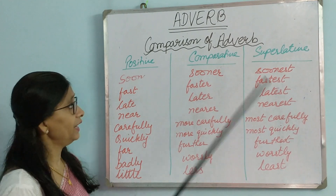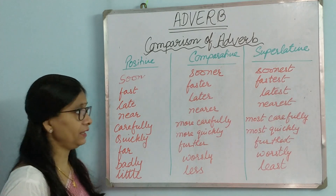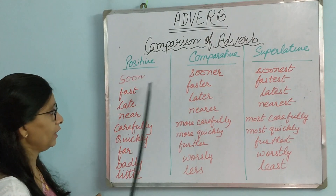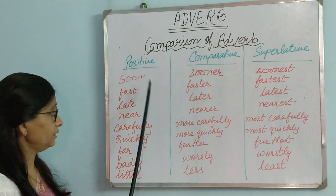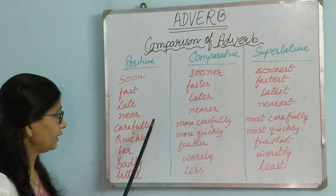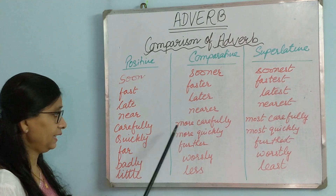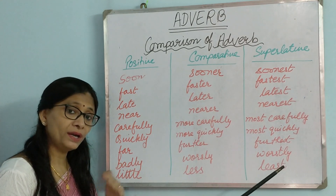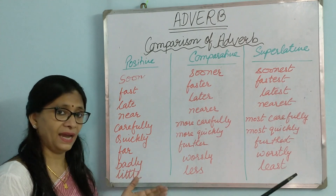Like adjectives, adverbs also have degrees of comparison — positive, comparative, and superlative. For some adverbs, we simply add -er and -est: soon, sooner, soonest; fast, faster, fastest; late, later, latest; near, nearer, nearest. For longer adverbs, we use more and most: carefully, more carefully, most carefully; quickly, more quickly, most quickly; intelligently, more intelligently, most intelligently; easily, more easily, most easily.